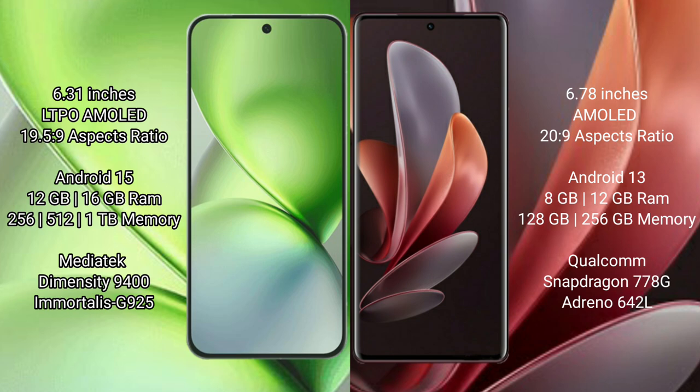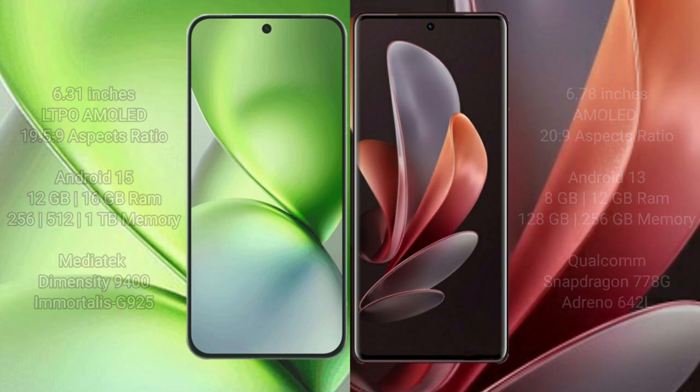Vivo X200 Pro Mini comes with 12GB or 16GB RAM and 256GB, 512GB, or 1TB internal storage, with a MediaTek Dimensity 9400 processor and GPU Mali-G925. Vivo V29 comes with 8GB or 12GB RAM and 128GB or 256GB internal storage, with a Qualcomm Snapdragon processor and GPU Adreno 642L.